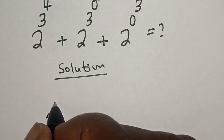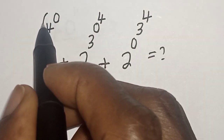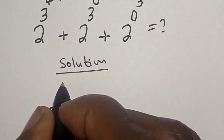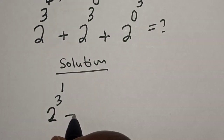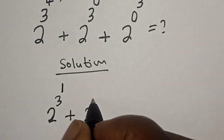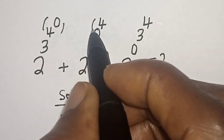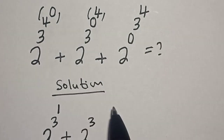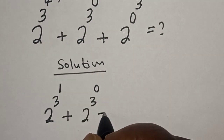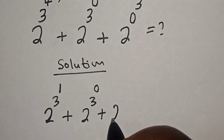2 to the power of 3. Let's work with this first expression: 4 to the power of 0 is 1, plus here we have 2 to the power of 3. Then let's work with the second: 0 raised to the power of 4 is 0, plus here we have 2 raised to the power of 0.